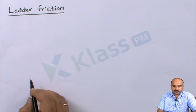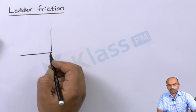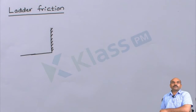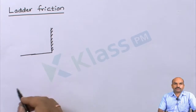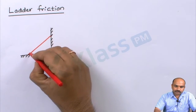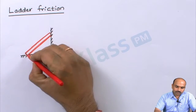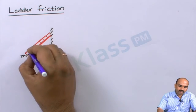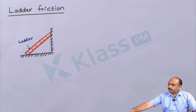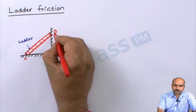This is the ladder friction problem. There is a vertical wall and a horizontal floor. Because it is a fixed vertical wall, we use this symbol. This is the horizontal fixed floor or surface. There is a ladder resting on the floor at a point A and resting on the vertical wall at a point B.